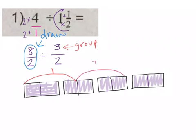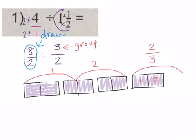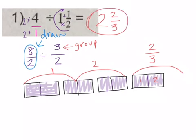One, two, three — that makes a second group. Then for the third group I don't quite have all my pieces. I can see I have one, two pieces out of the three pieces I needed, so I write that as a fraction: two out of three. My final answer is two full groups and two-thirds of another group. So four divided by one and a half is two and two-thirds, and that is how you model that.